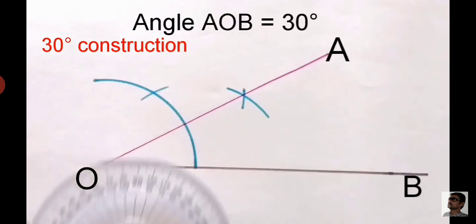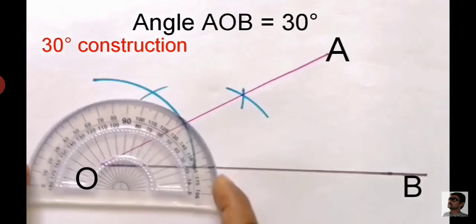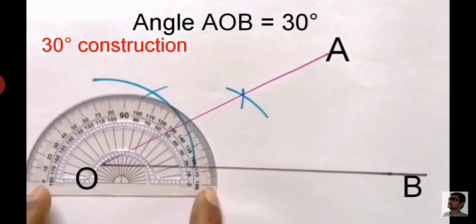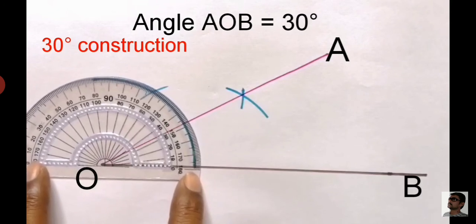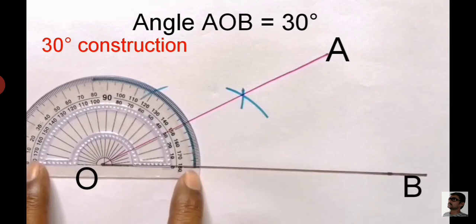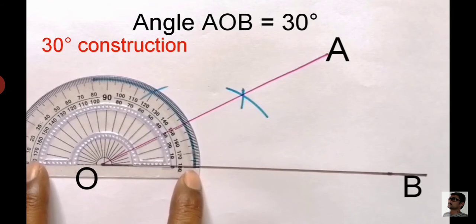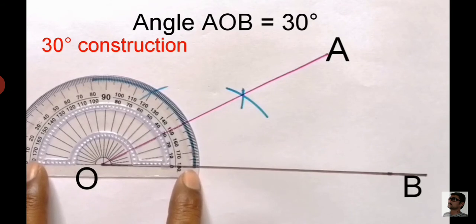Now we will show the bisection of angle AOB to get the angle of 15 degrees. First of all, we check our angle AOB and we can see with the help of a protractor that it is exactly 30 degrees.